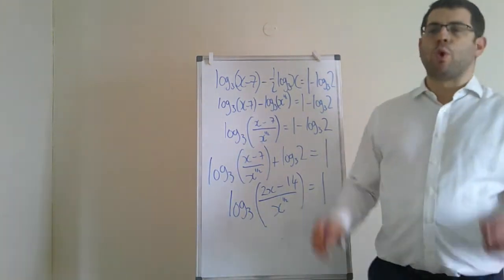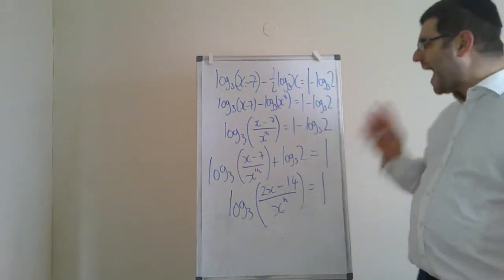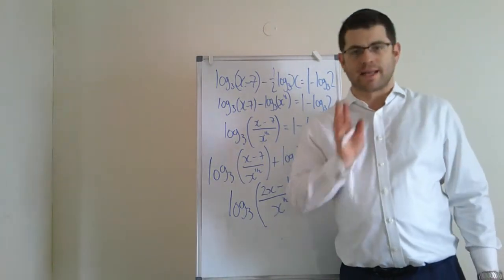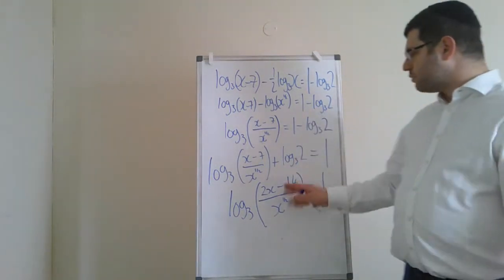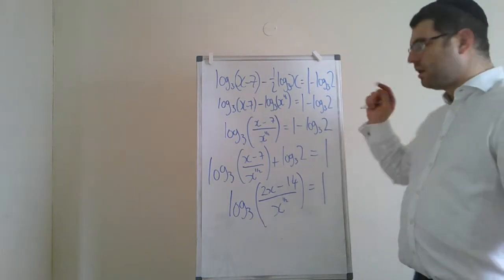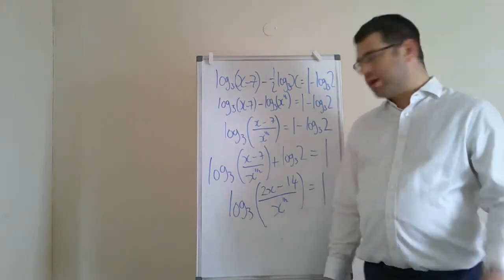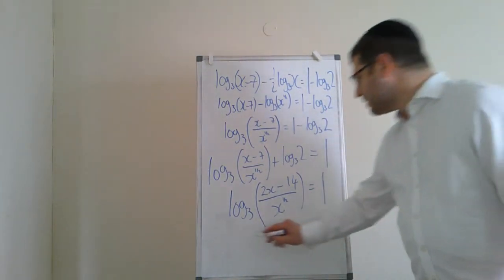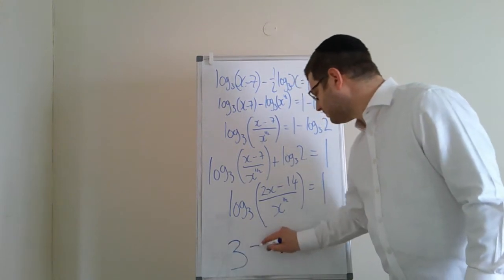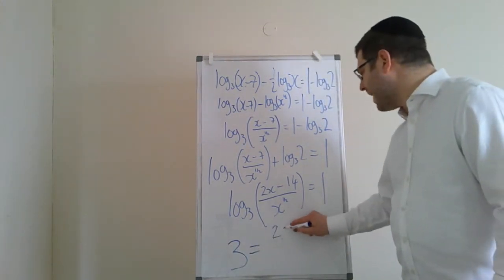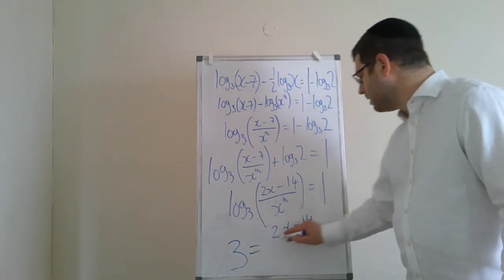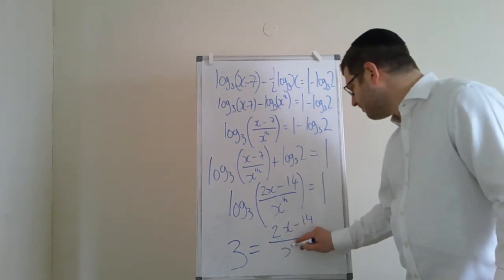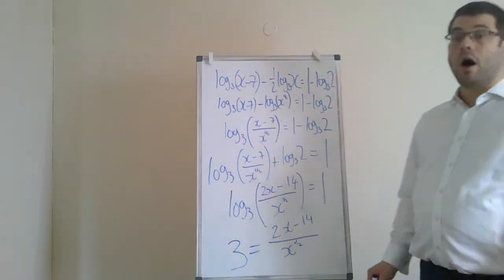Now, remember what I said: when you have a single logarithm, now is the time to activate the definition of the log. What does this really mean? It means 3 to this power—3 to the power of 1 is easy, it's just 3—is equal to this. So we end up with 3 is equal to 2x minus 14 over x to the half.